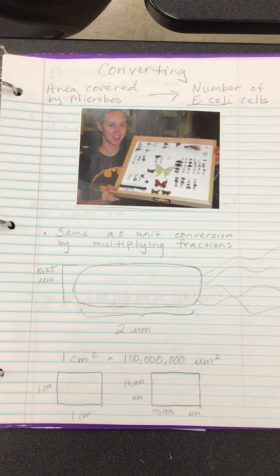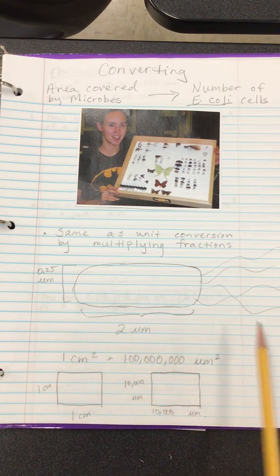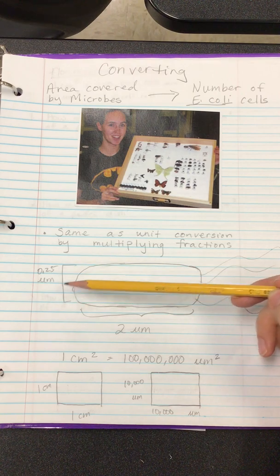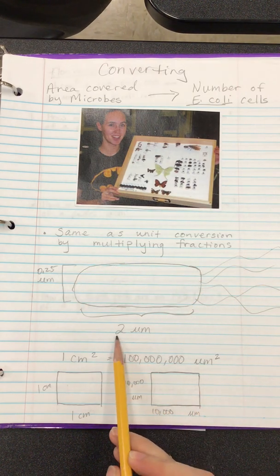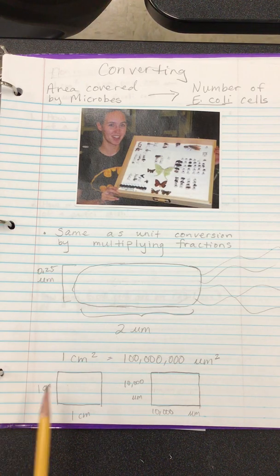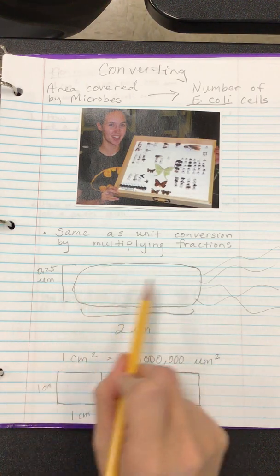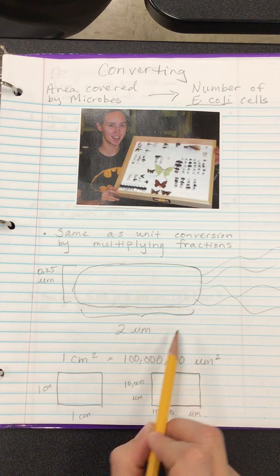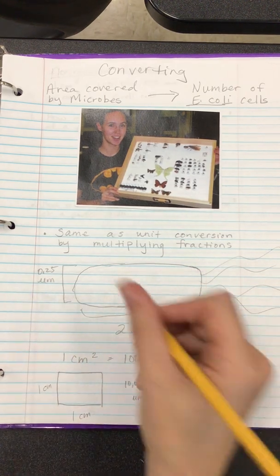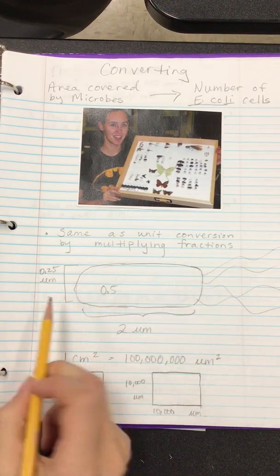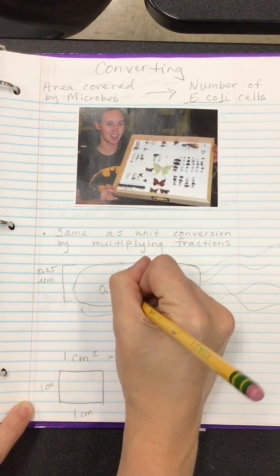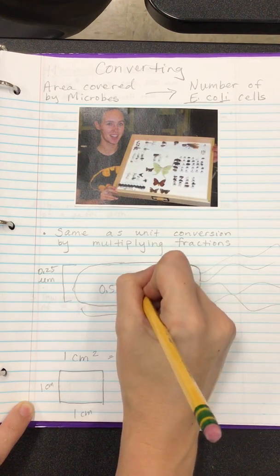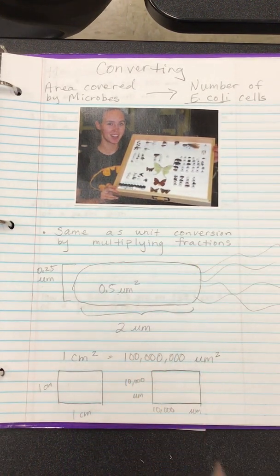Roughly, based on our friend Wikipedia, an E. coli cell is between 1 and 2 micrometers long and 0.25 micrometers wide. We're going to call it 2 micrometers for the sake of this example. In order to get the area of one rectangular face of this bacteria, we'll multiply height times length. That's 2 times 0.25 equals 0.5 micrometers squared. One micrometer is the same as 1 ten-thousandth of a centimeter.